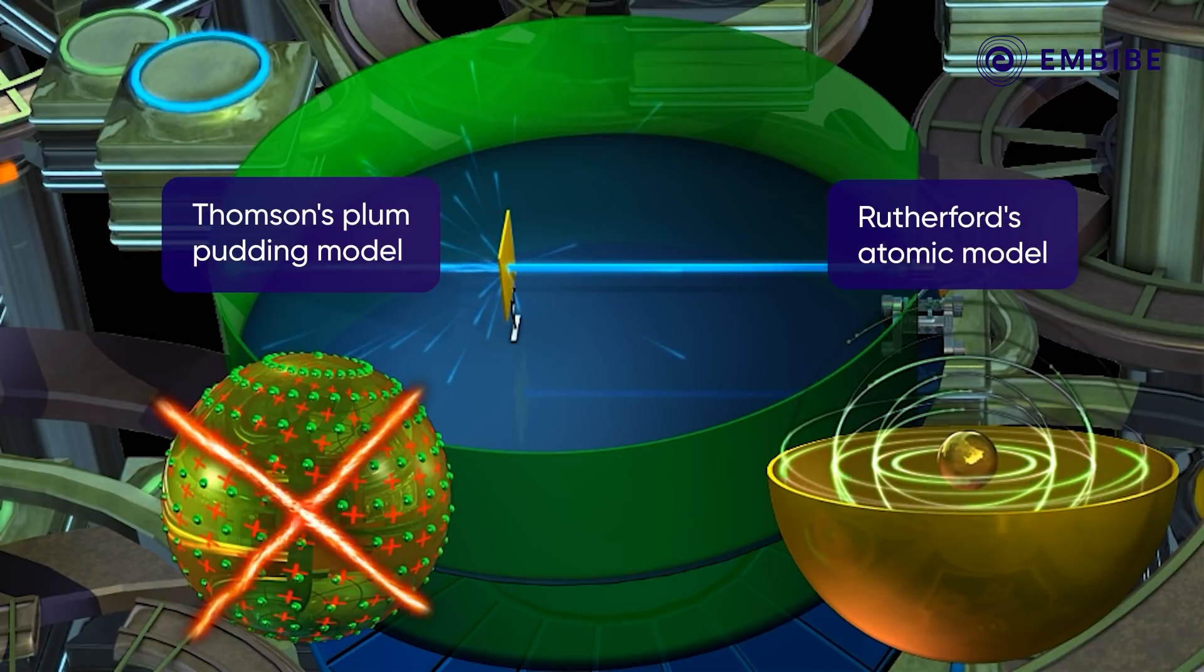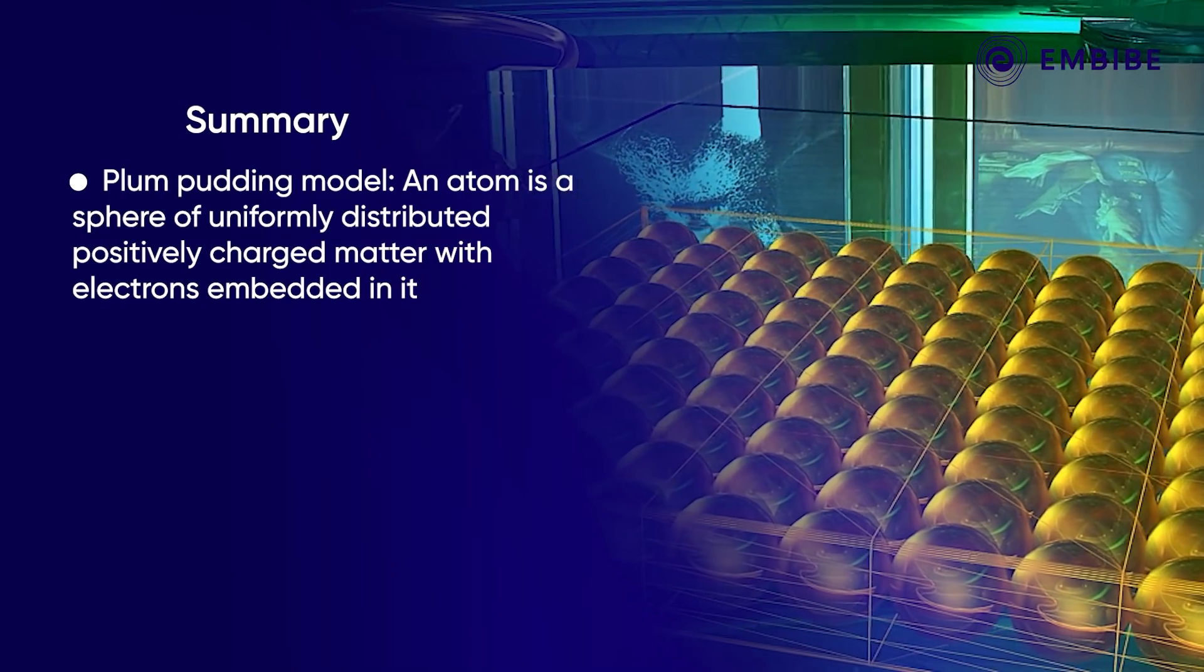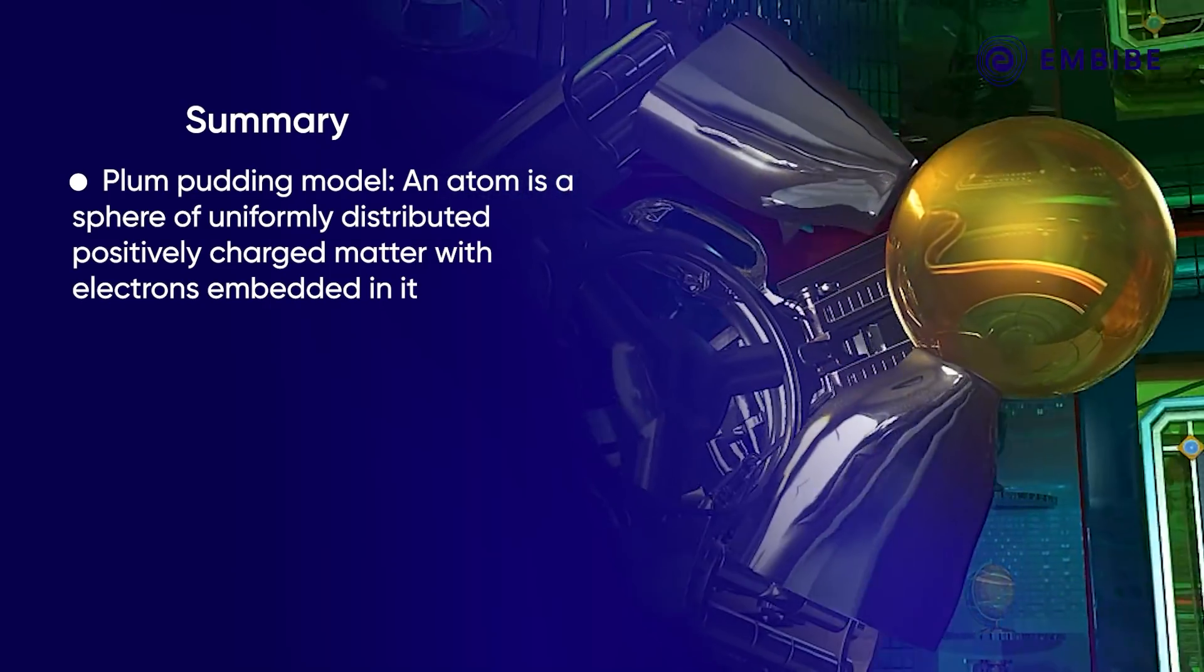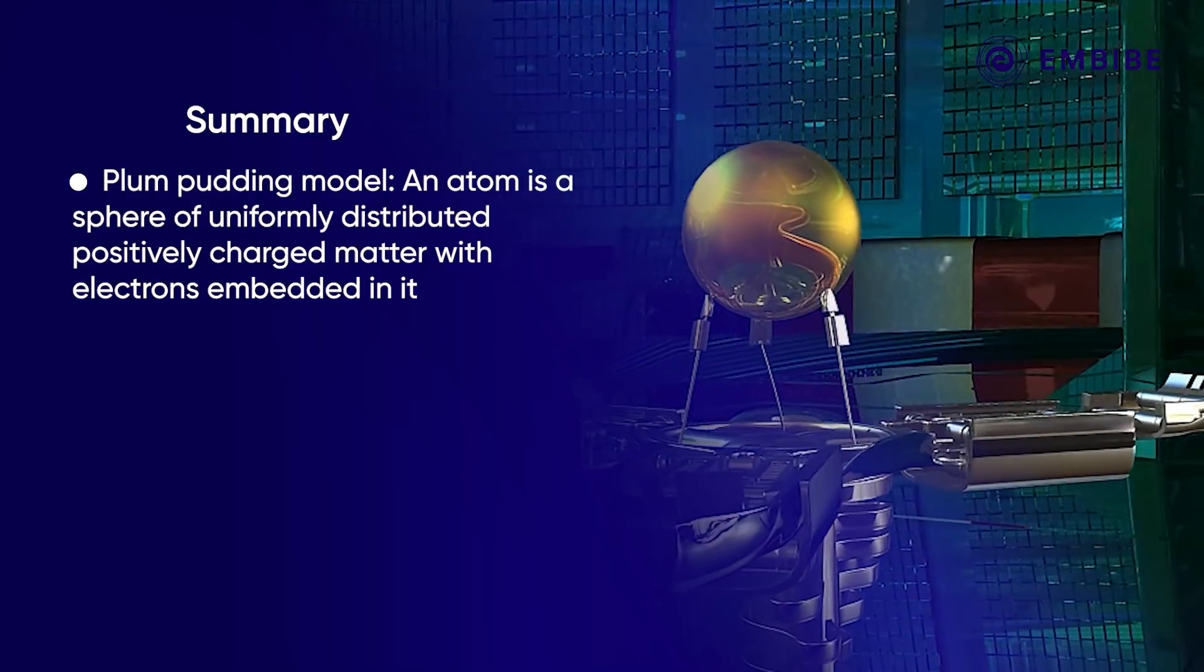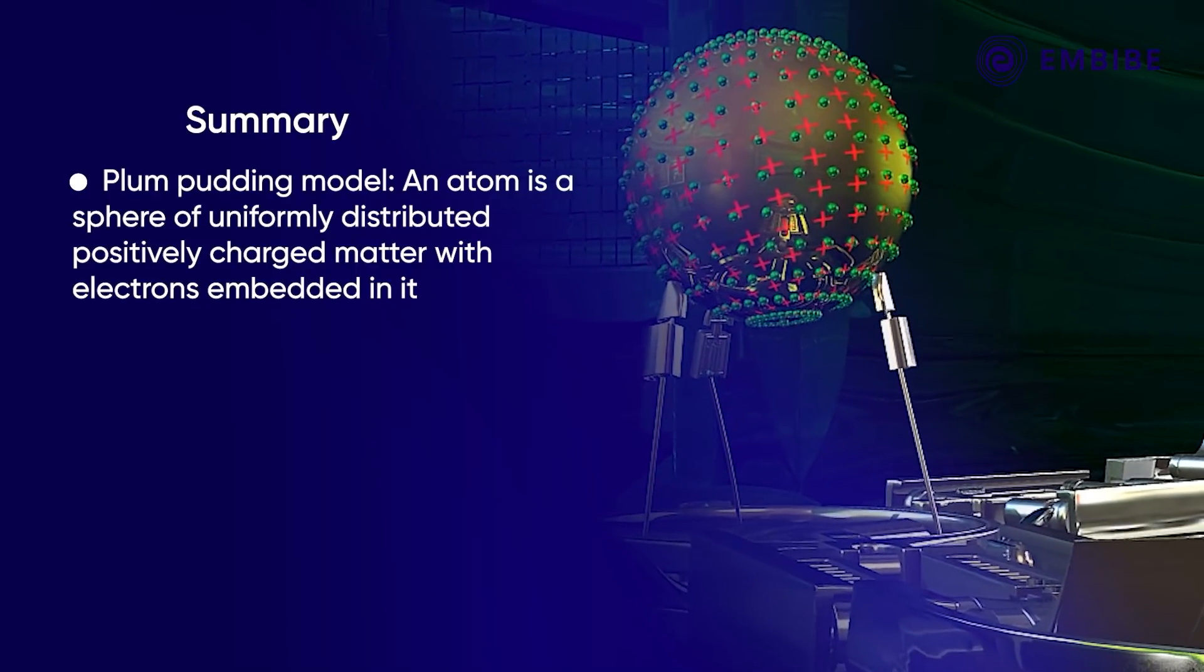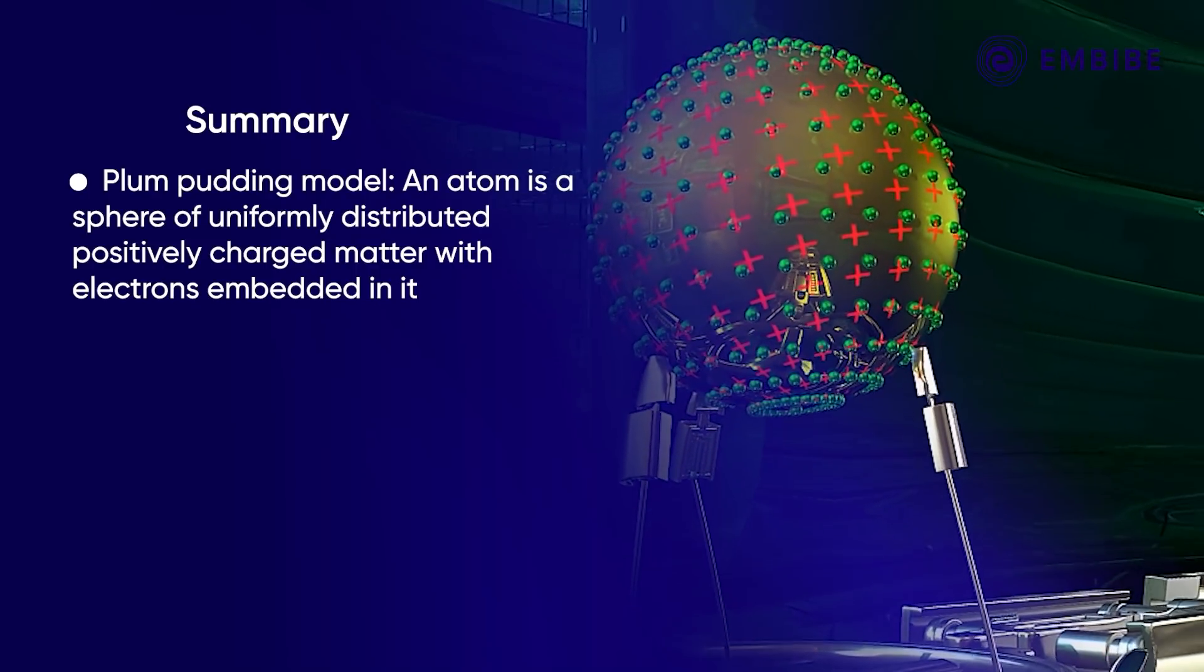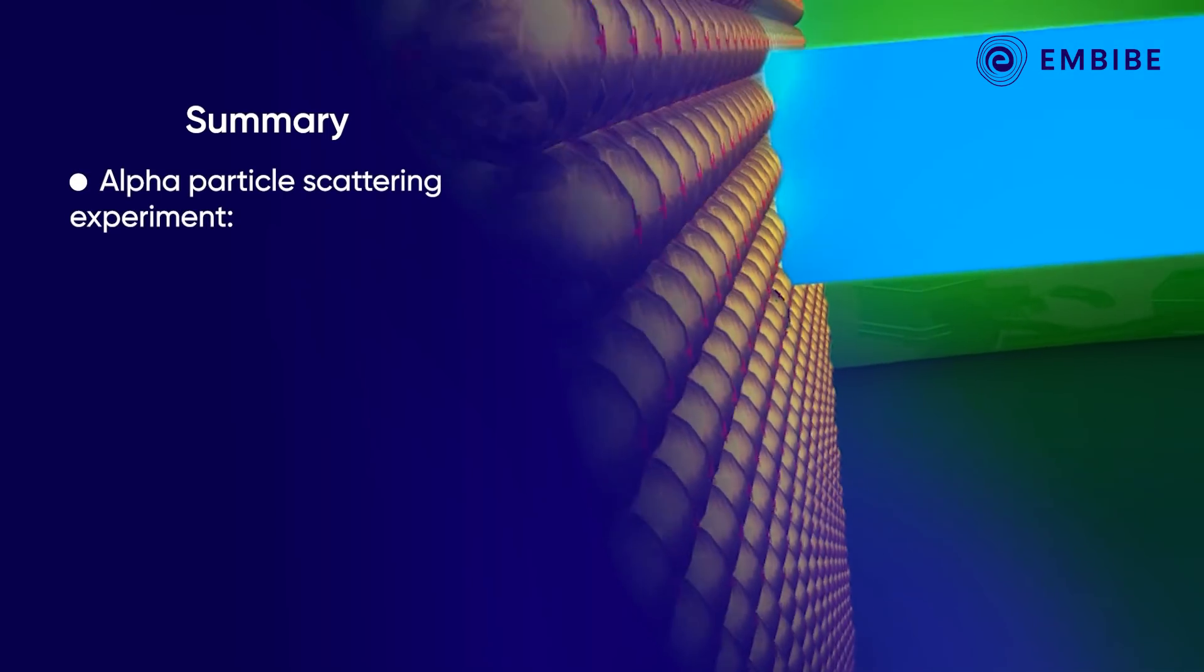To summarize, around 1909 Thompson proposed that an atom is a sphere of uniformly distributed positively charged matter with electrons embedded in it and called it the plum pudding model.